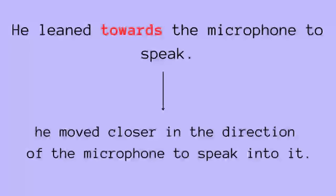She leaned towards the microphone to speak. What does that mean? It means that she wasn't basically near the microphone, but then decided to move closer in the direction of the microphone. Why? To use the microphone to speak. So this is how you can use toward.